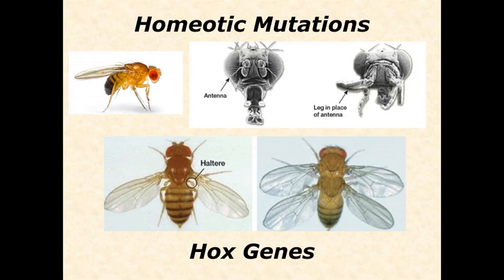Sometimes genes have very boring names or are just given numbers, especially when they were found during large screens or are part of a gene family discovered later. Also, homologues of genes in different groups sometimes have different names because they were not originally recognized as homologues. The genes that cause these big developmental shifts are called homeotic mutations, and a particularly important subclass of them became known as HOX genes.